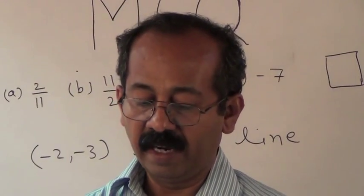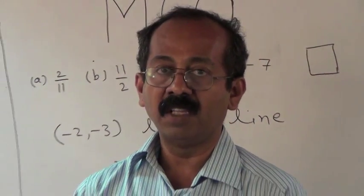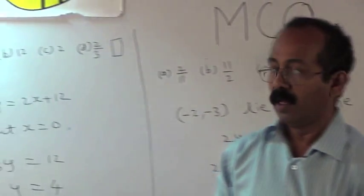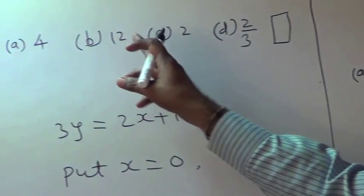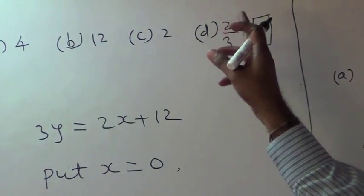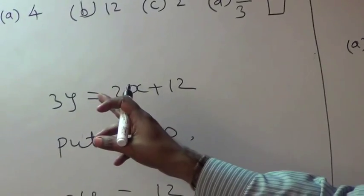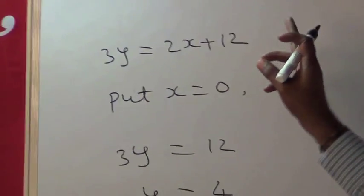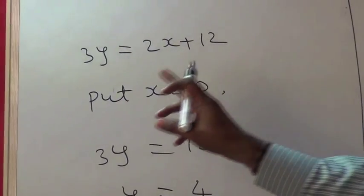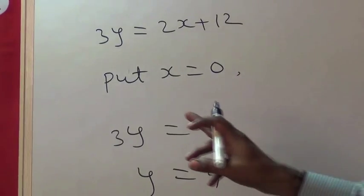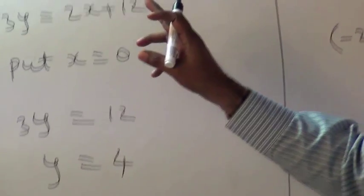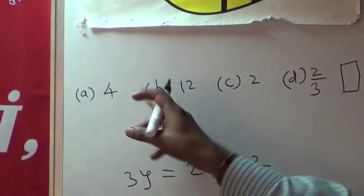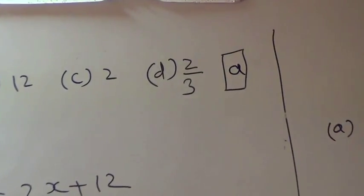Example 8: What is the y-intercept of the line 3y = 2x + 12? The alternatives are: A) 4, B) 12, C) 2, D) 2/3. Substituting x = 0, we get 3y = 12, so y = 4. Alternative A represents answer 4, so A is the correct alternative.